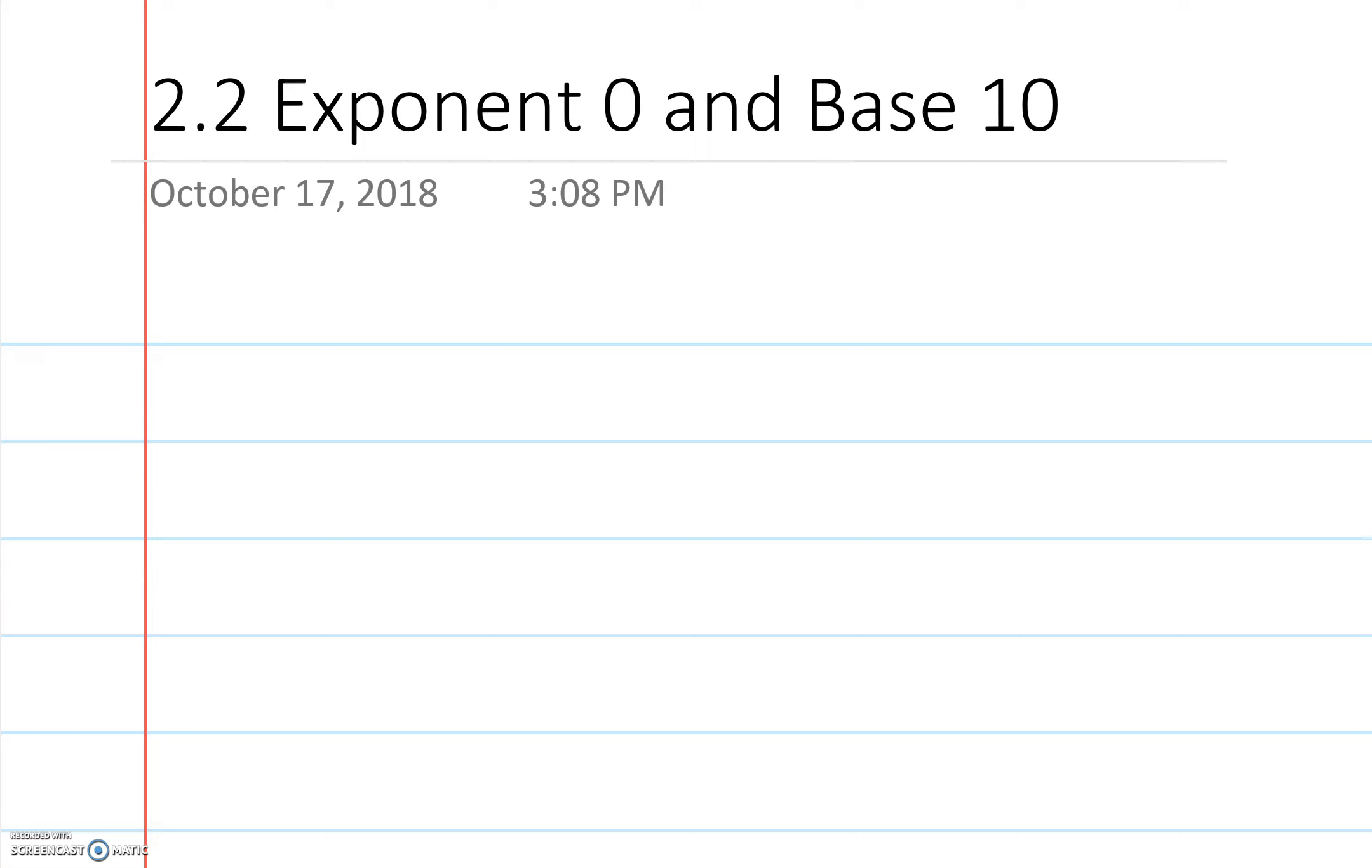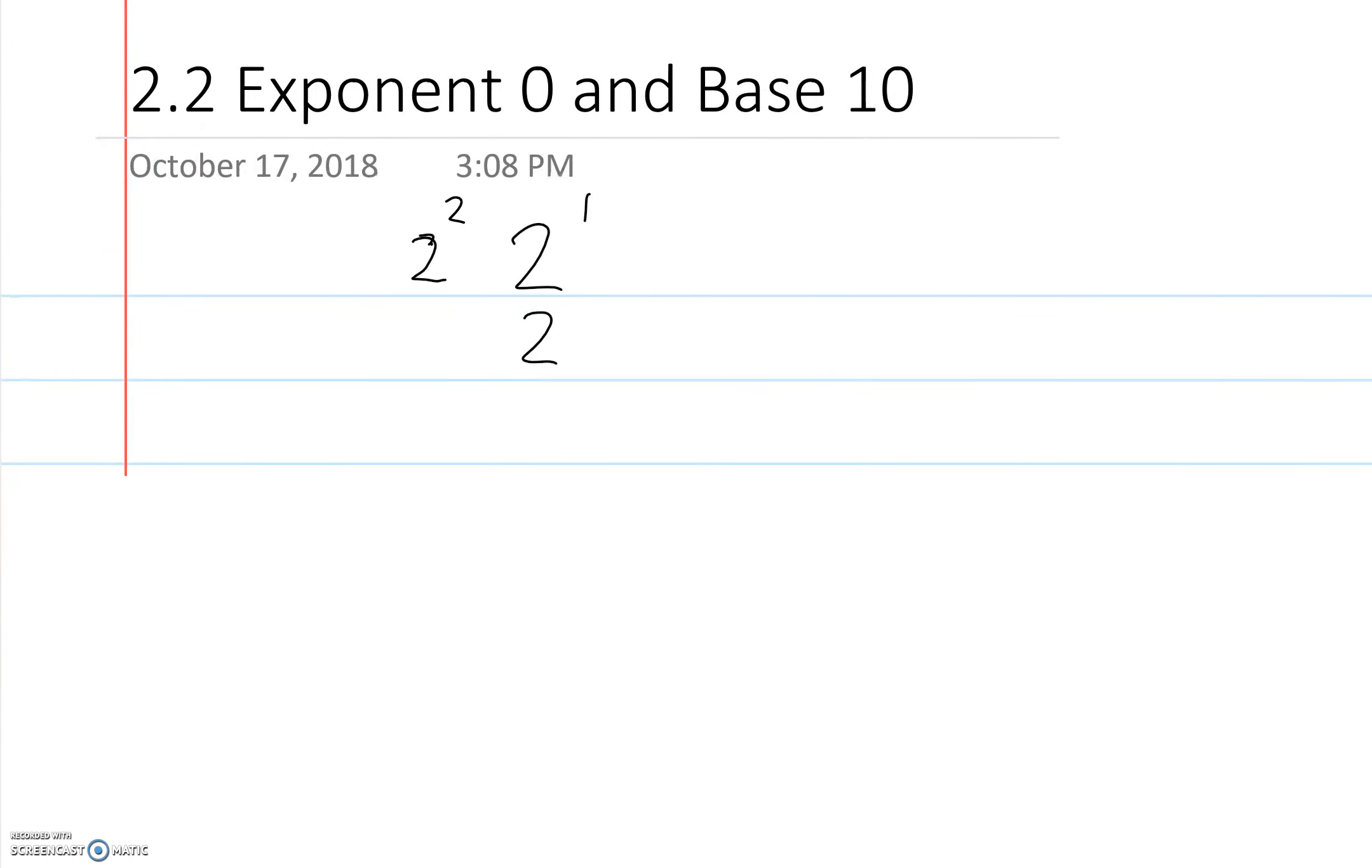So first of all, we're going to put a couple numbers that we do know. 2 to the 1, we should know, is 2. Anything to the 1 is just itself. 2 to the 2 is 4. 2 to the 3 is 8. 2 times 2 times 2 is 8. So this is our pattern going up.